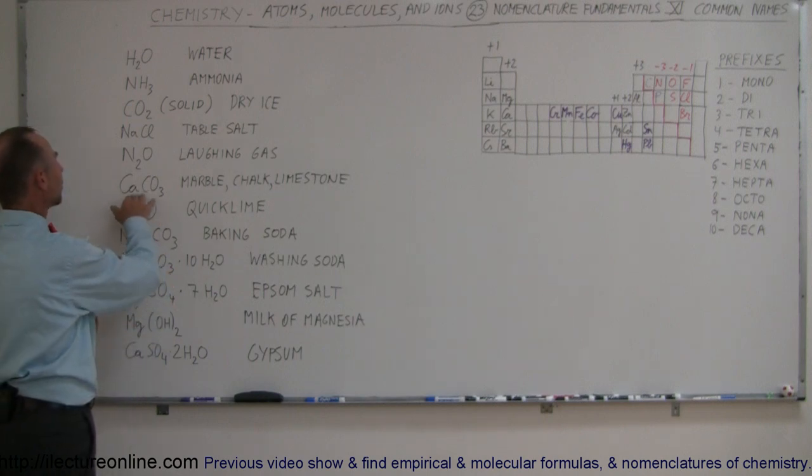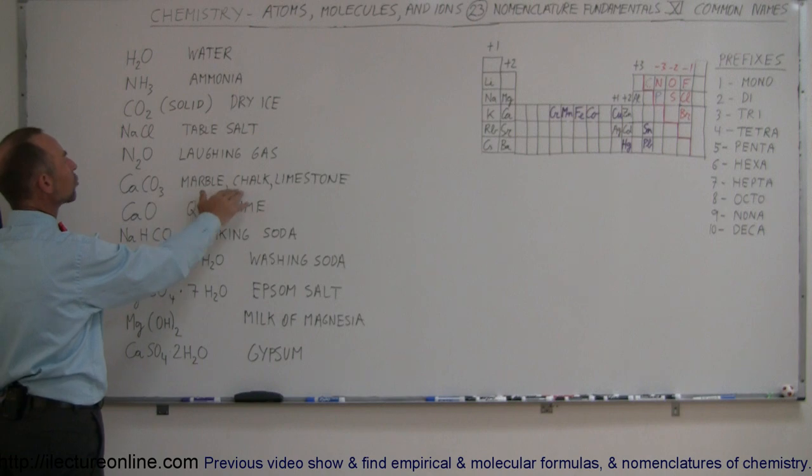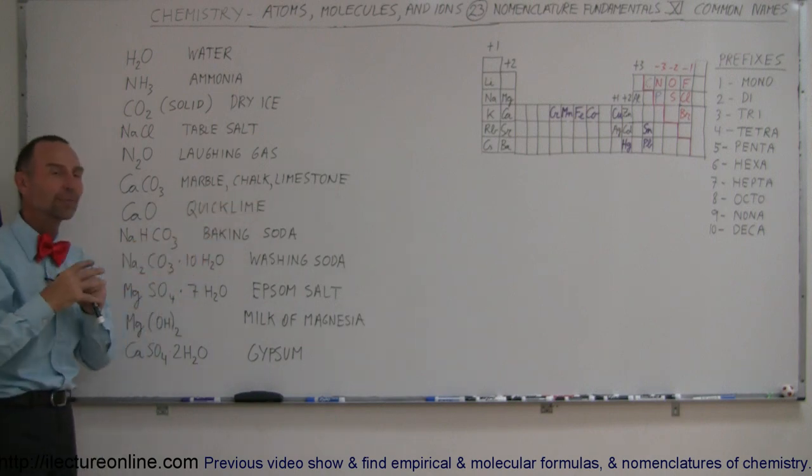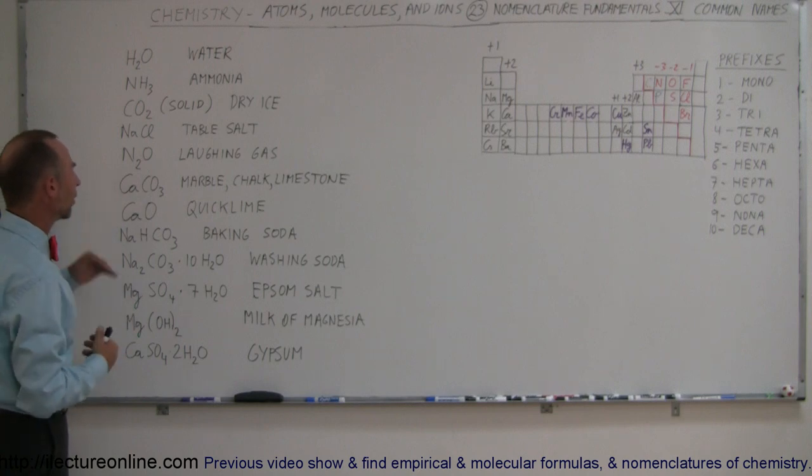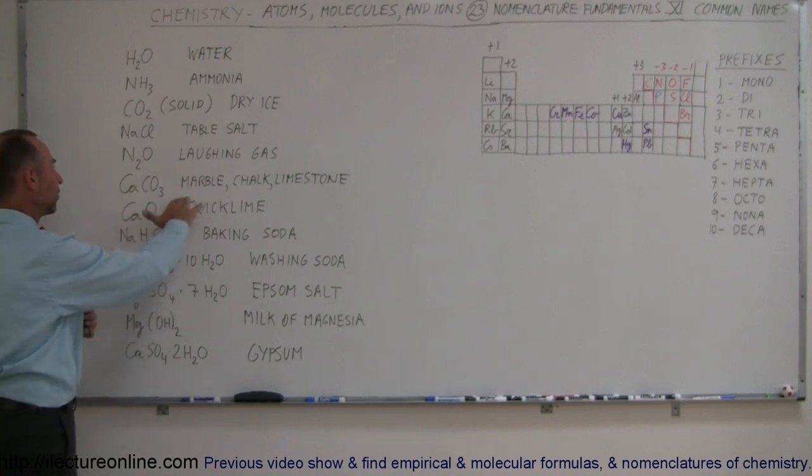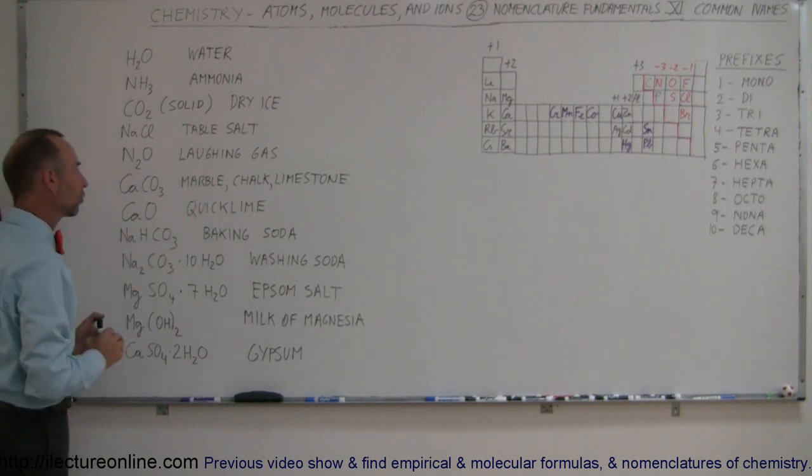We have calcium carbonate that's also known as either marble, charcoal, limestone depending upon how it's being compressed and what form it is found at. Calcium carbonate is a form of chalk that you write with on the blackboard or if it's compressed and under heat and pressure it can turn into marble.